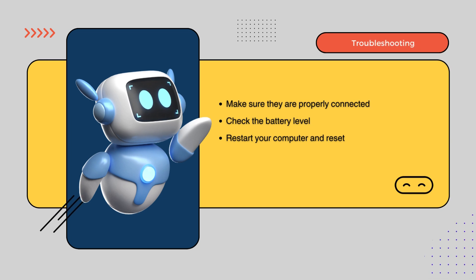Your mouse or keyboard isn't responding? How bizarre. Let's start with the easy fixes. Make sure they're properly connected and that fresh batteries are installed if needed. If that doesn't work, restarting your computer can sometimes reset things. Don't worry, you can still control your computer using the on-screen keyboard or mouse controls if needed. If you still need help, make sure you ask a teacher or adult.